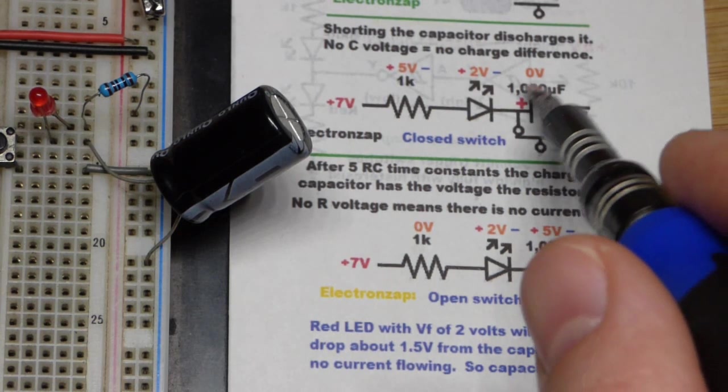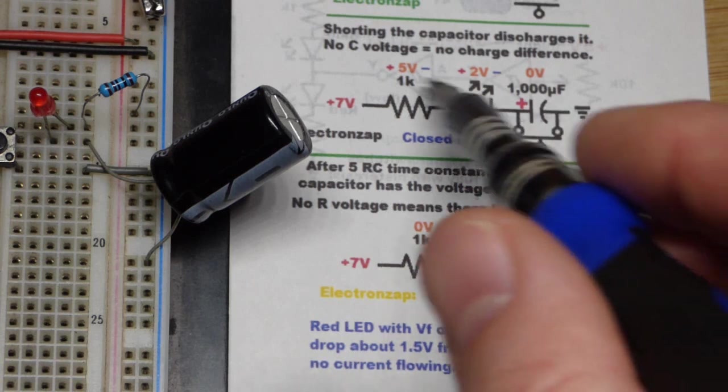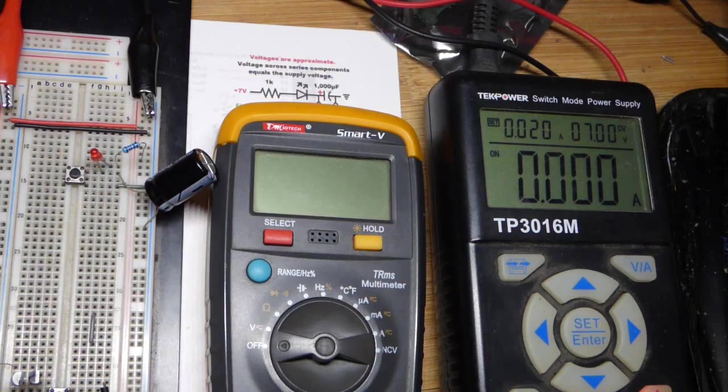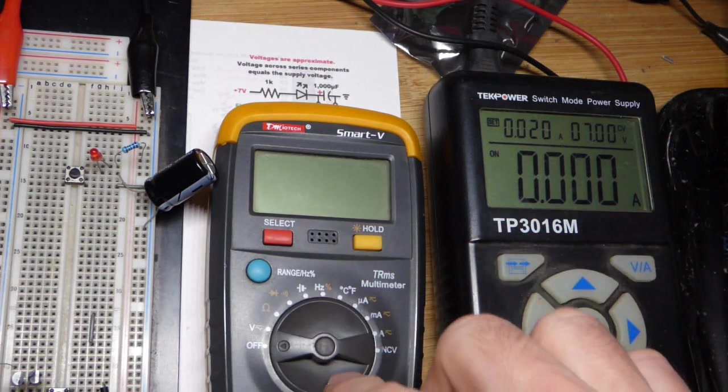But there you can see, close the switch, there will be 0 volts across it. These two components will have 7 volts across them total. So now we're going to grab the multimeter and take